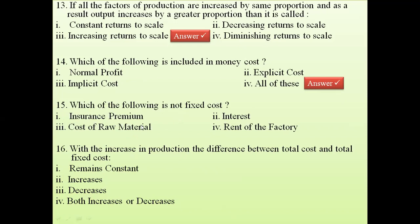Question 15: which of the following is NOT a fixed cost — insurance premium, interest, rent of the factory, or cost of raw material? The answer is cost of raw material. Insurance is fixed, interest is decided by the bank and also fixed, and rent of the factory is almost fixed. But cost of raw material varies depending on government subsidies or different varieties used, so it is not a fixed cost.